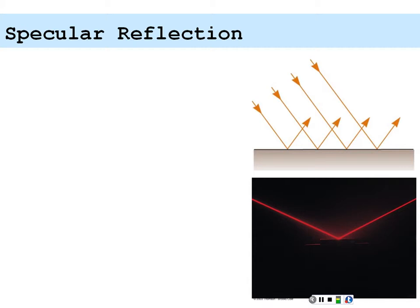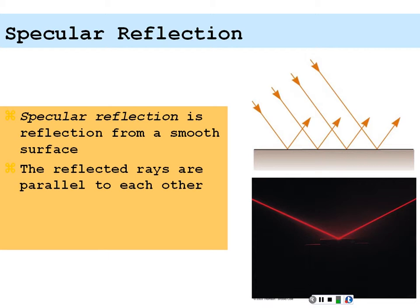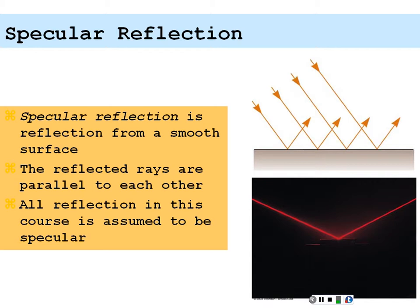We define specular reflection as reflection from a smooth surface where the reflected rays are parallel to each other. So if you have different rays coming in indicating the direction of incoming light, all of those reflected rays are indeed parallel to each other. All reflection in this course regarding the nature of light is going to be assumed to be specular reflection.